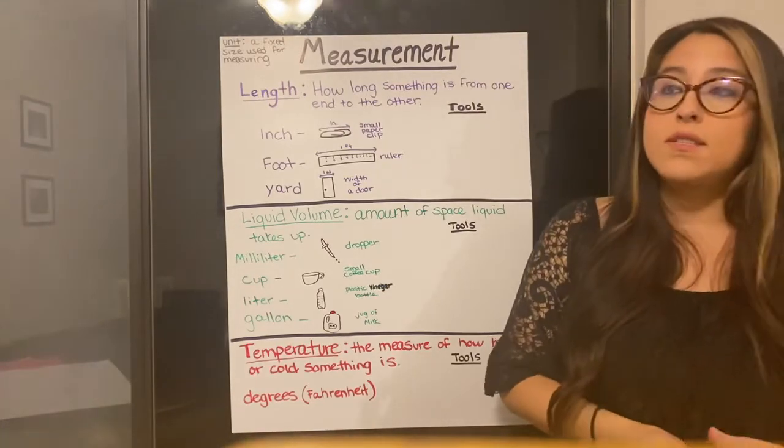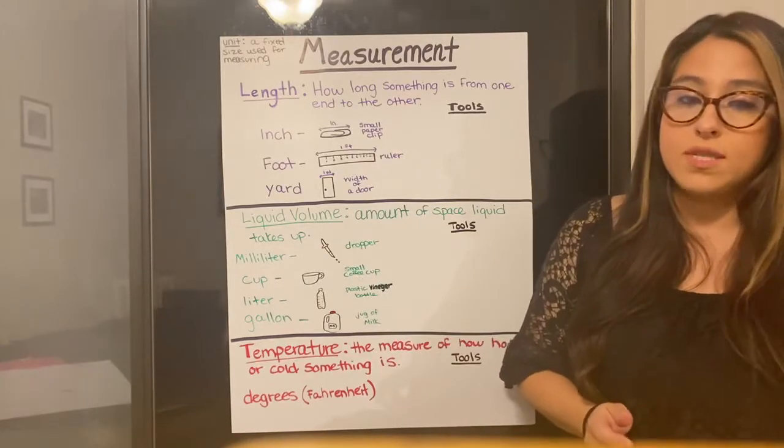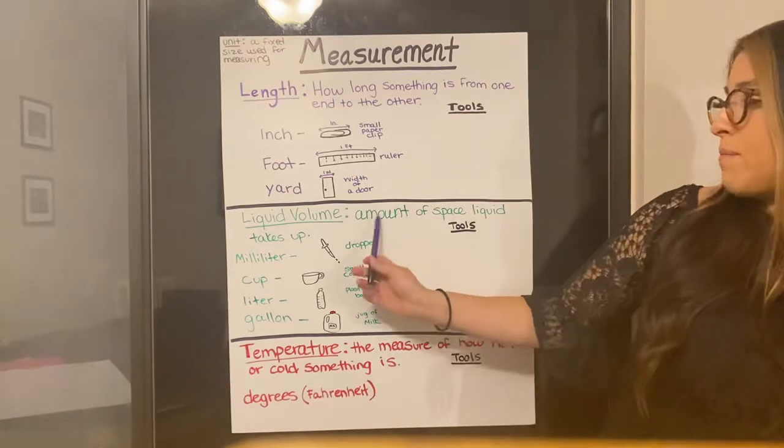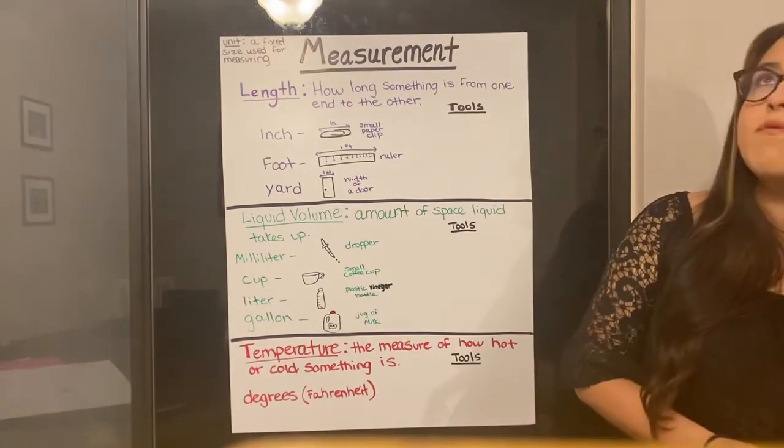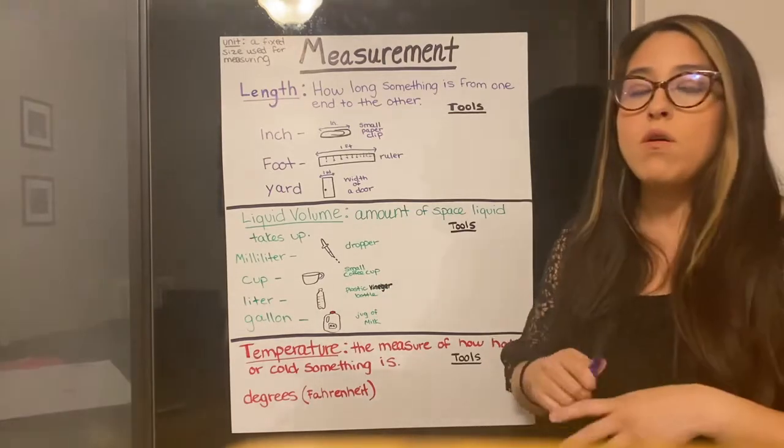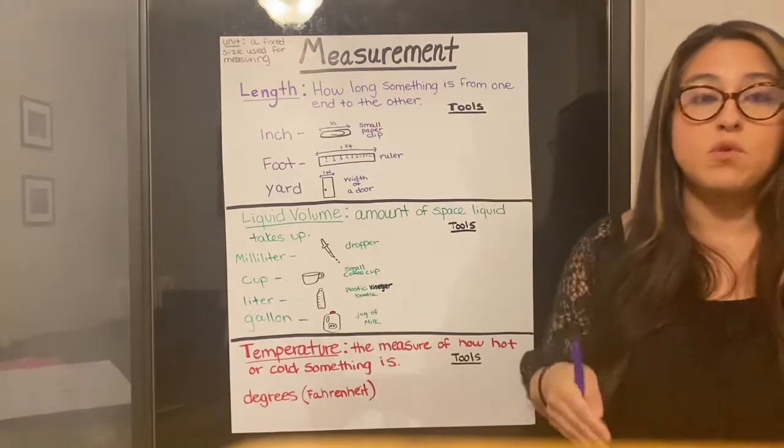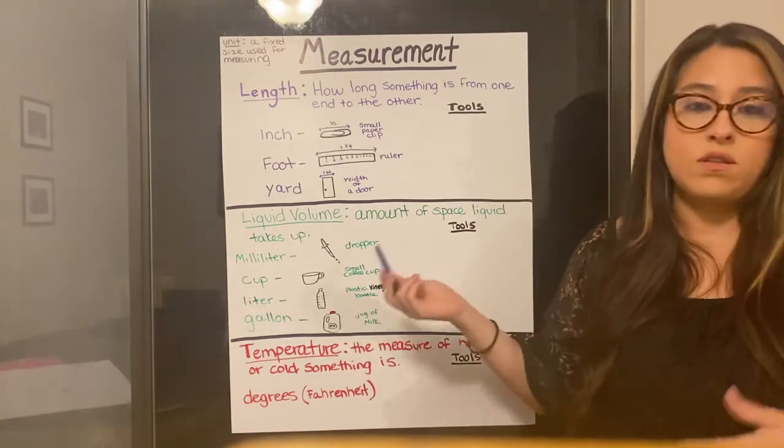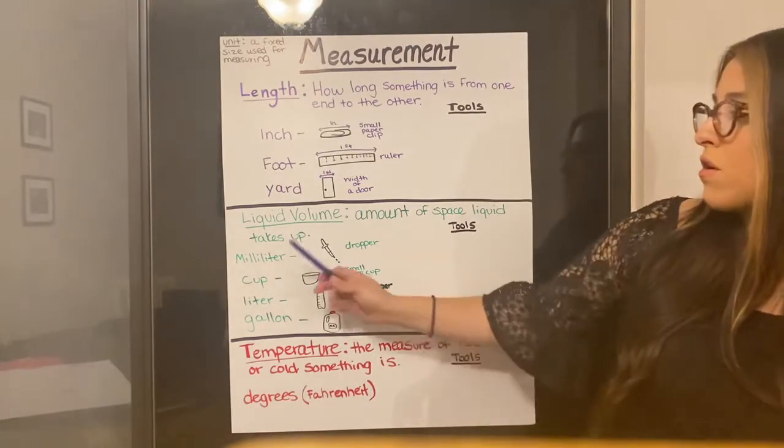So our next type of measurement is liquid volume. Sometimes you will see it called capacity. The liquid volume is the amount of space liquid takes up. So if we have a cup, if you have your water bottle and you have water in it, and you want to know how much water you have in your bottle, that's why we would need to find the liquid volume.